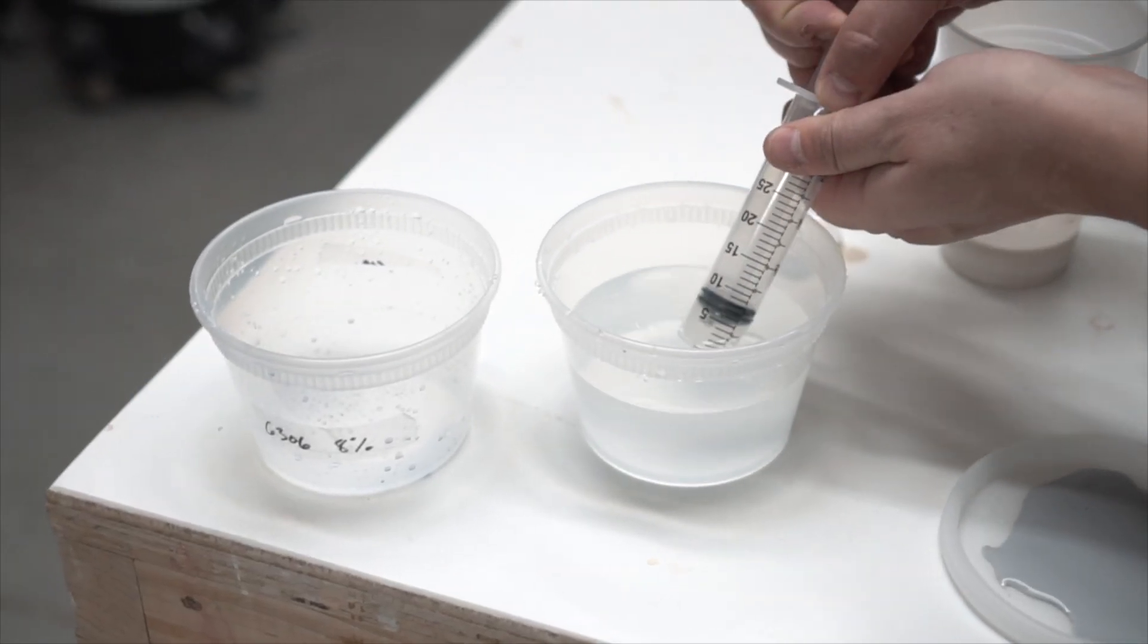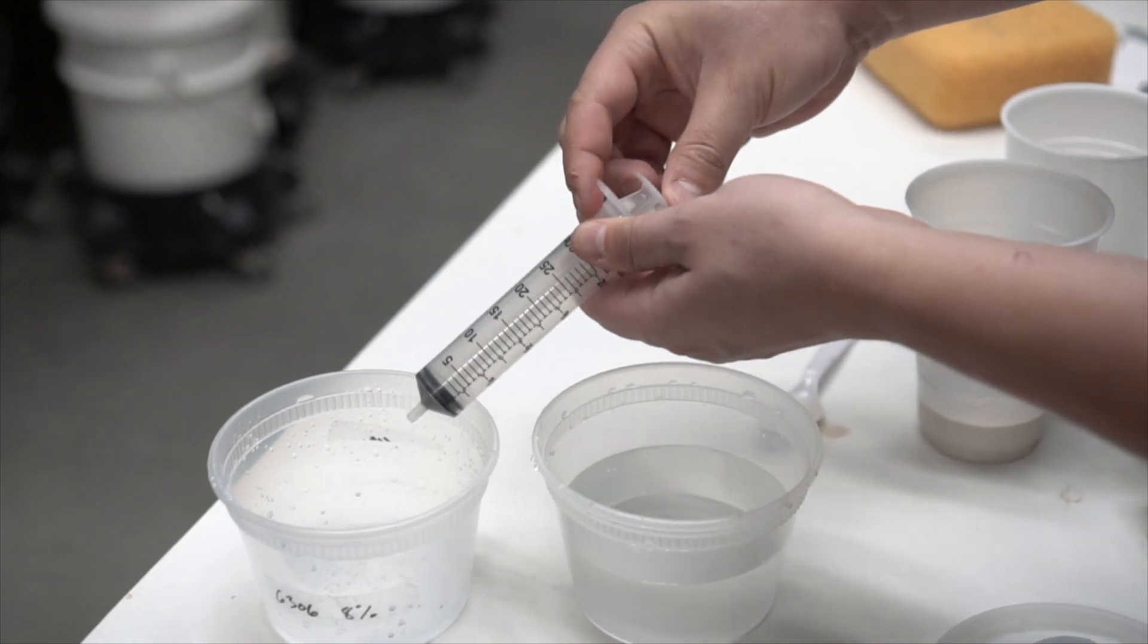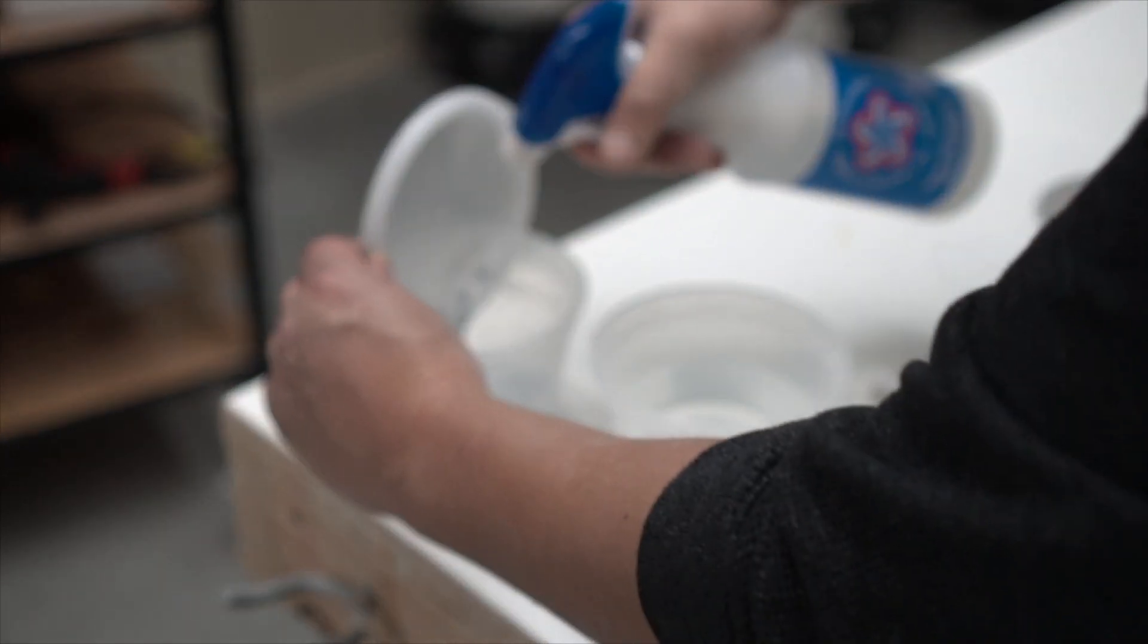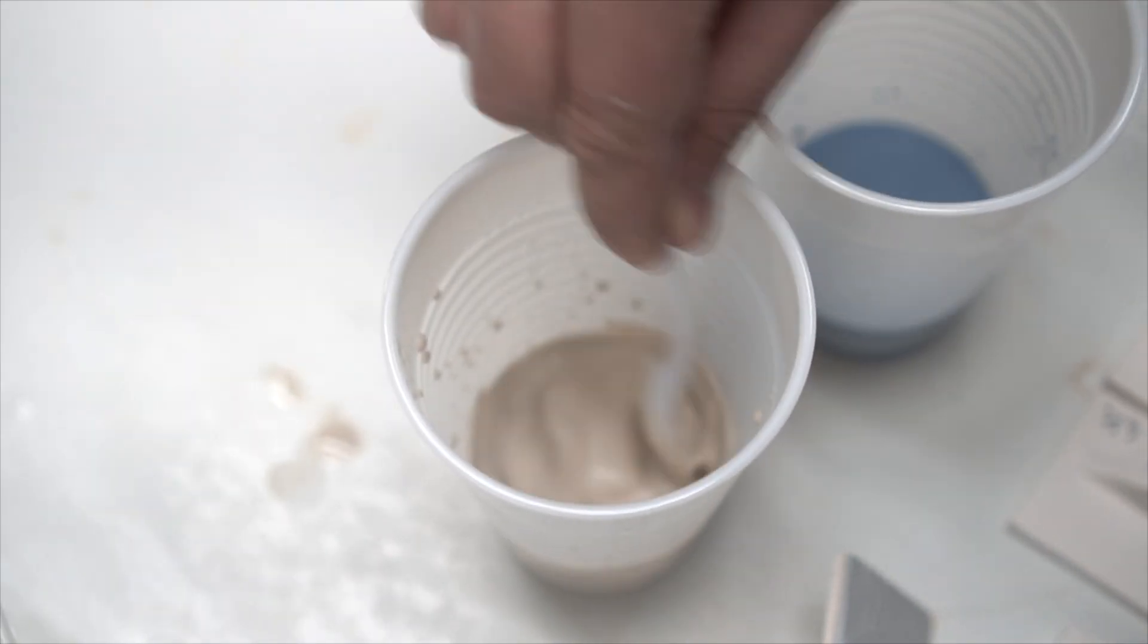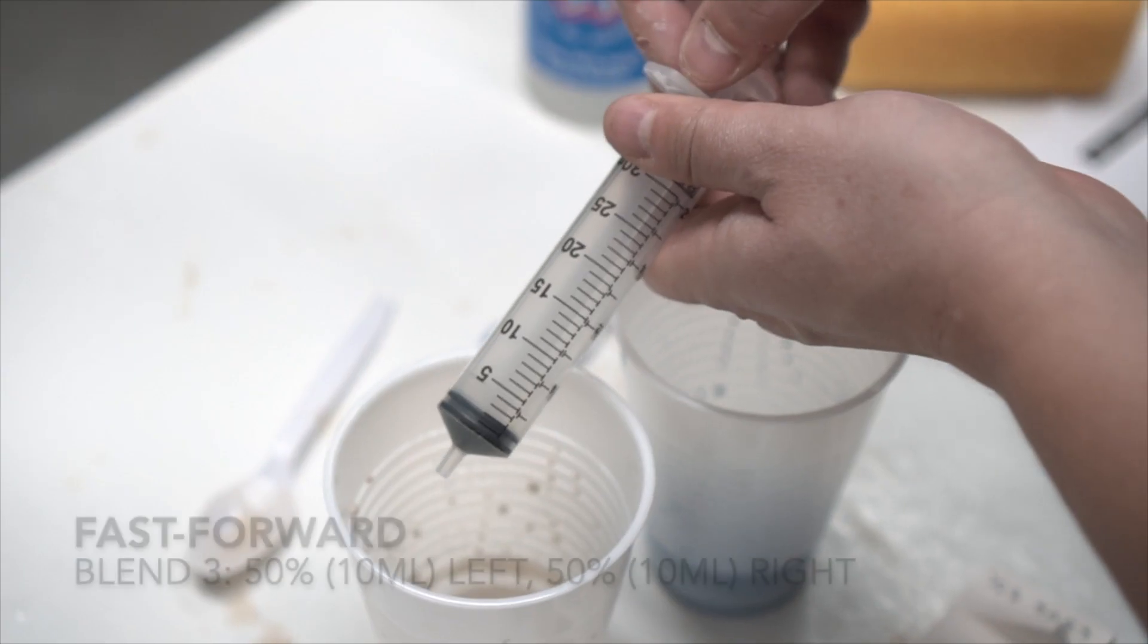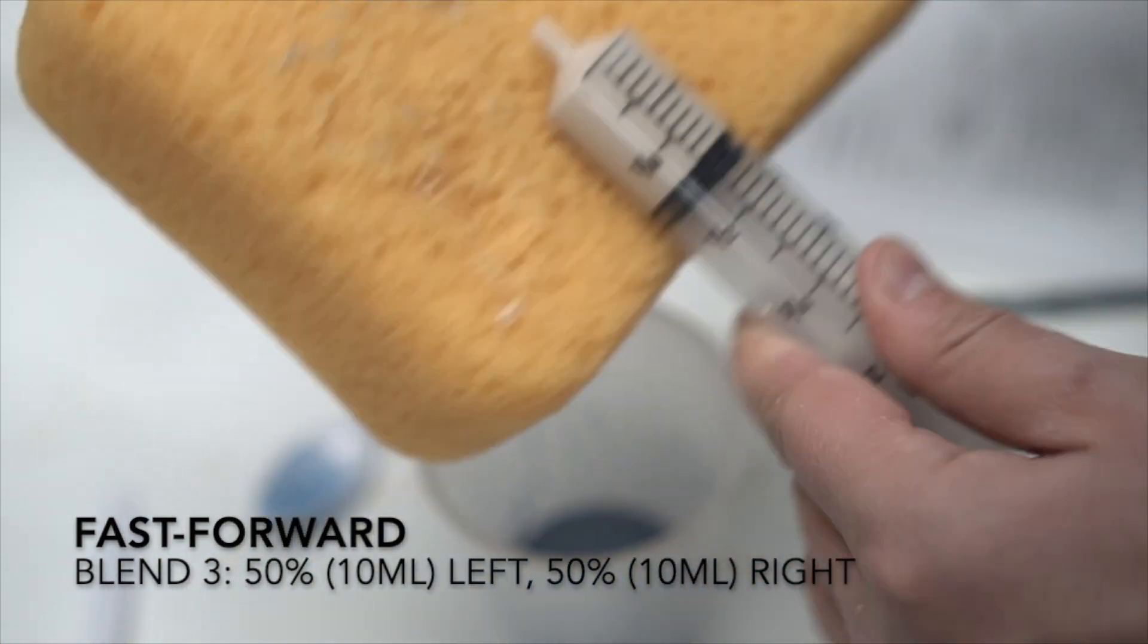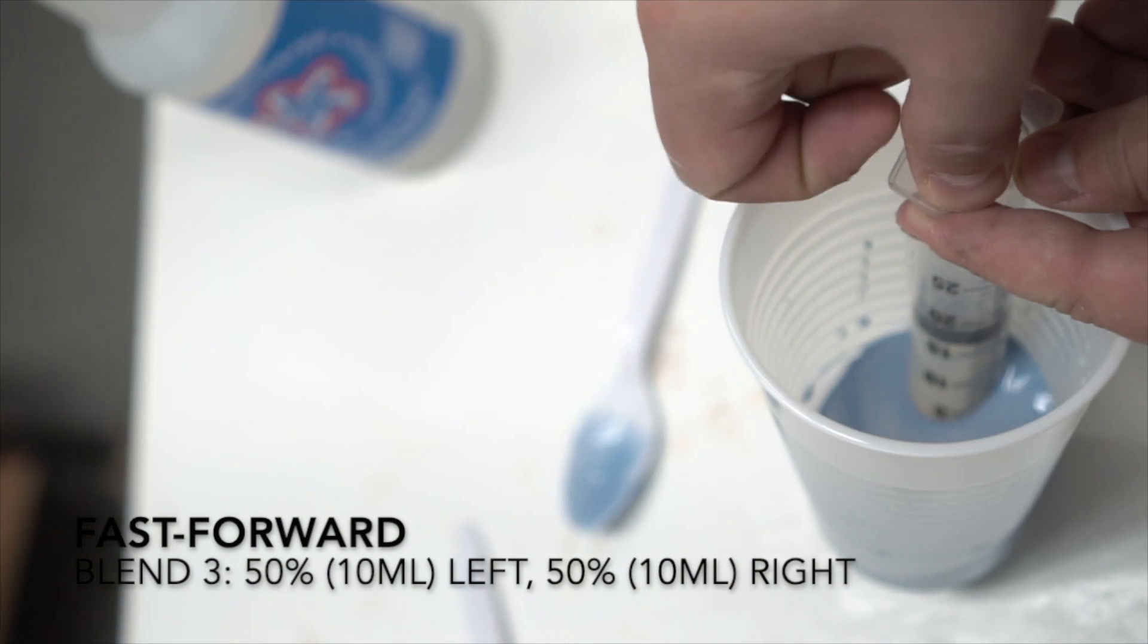After the application is complete, I can clean off the syringe, spray off the lid, and get ready for the next test. Before I use the syringe, I make sure that both of my glazes are mixed well. This is test number three, the middle blend test, and has equal amounts of both glazes. So I'm going to put in 10 milliliters of the left glaze and 10 milliliters of the right glaze.